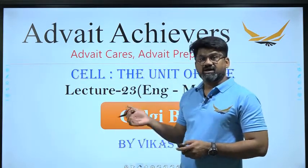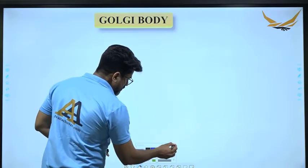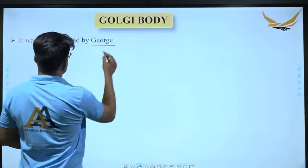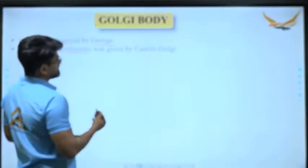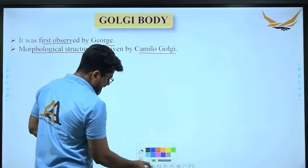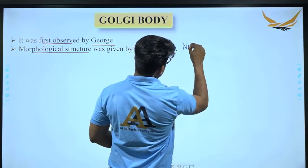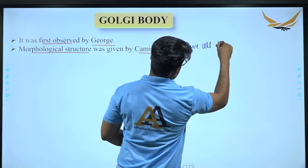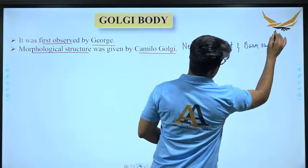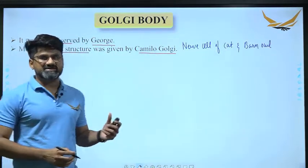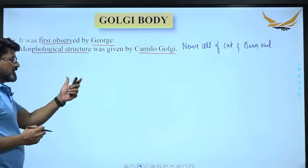If we talk about Golgi body, it was first observed by a scientist George. The morphological structure was given by Camillo Golgi. Camillo Golgi basically studied the nerve cells — neurons of cat and barn owl — and identified the Golgi body.